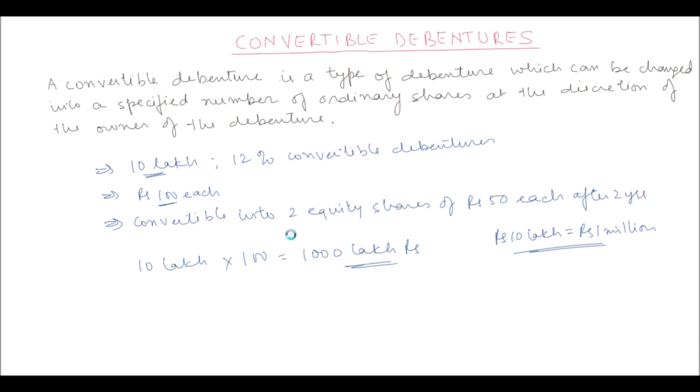Now these debentures are going to be converted into equity shares after 2 years. So till the first 2 years, the owner of the debentures is going to get 12% interest on these debentures. So basically overall the organization will have to shell out Rs. 1000 lakh multiplied by 12%, which will be equal to Rs. 120 lakh per year. This is the interest.